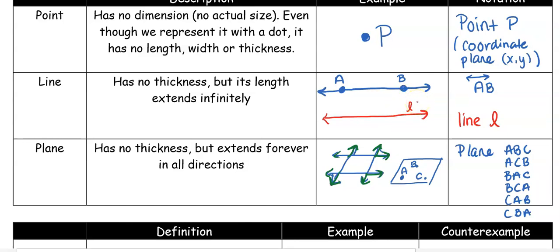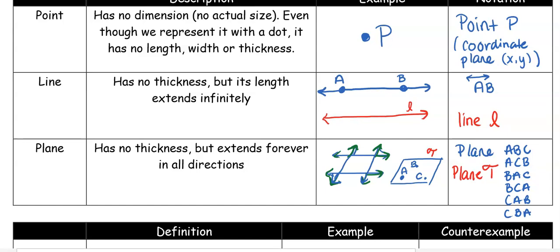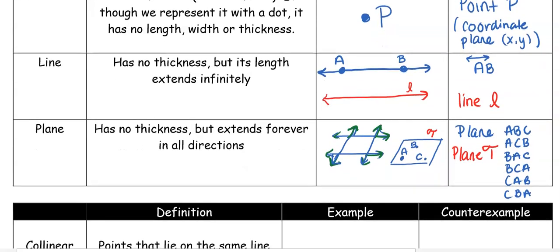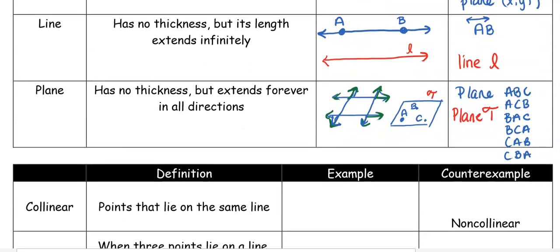A line can be named with a lowercase cursive letter; a plane would be named with an uppercase cursive letter, so I could also call this plane T. But generally we just use the three letters — it all depends on what the picture has. Those are the three undefined terms of geometry. Today is just going to be about vocab and notation.